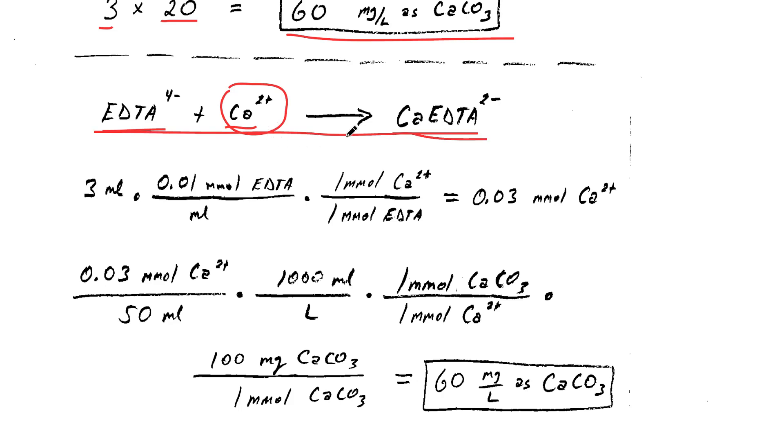Now that the calcium is gone from the indicator, the indicator turns blue, and that was the endpoint of our titration. So the amount of EDTA that we added to cause this color change ends up being the same amount of calcium that must have been in the sample before we started adding the EDTA.